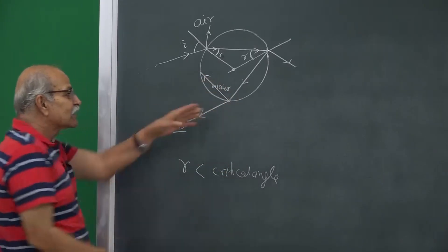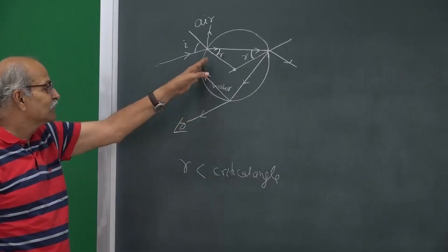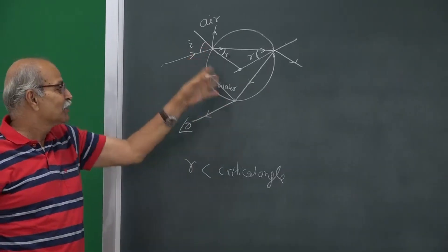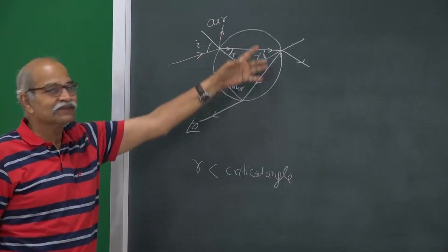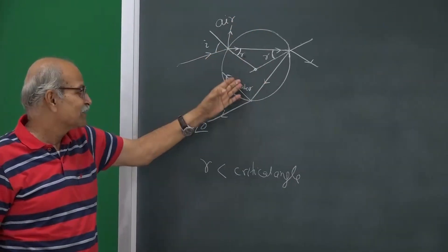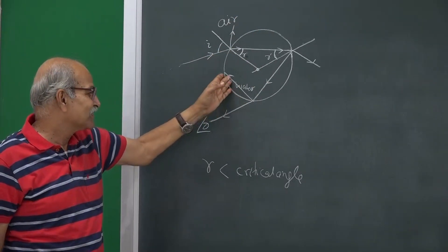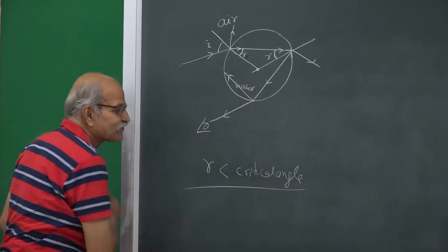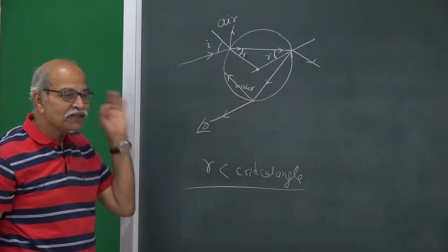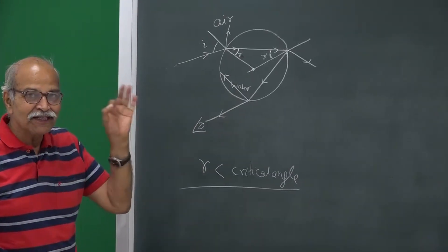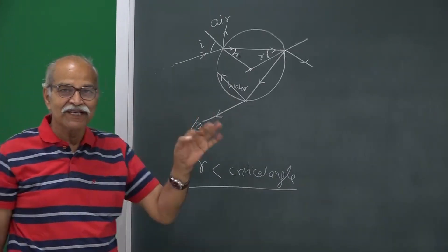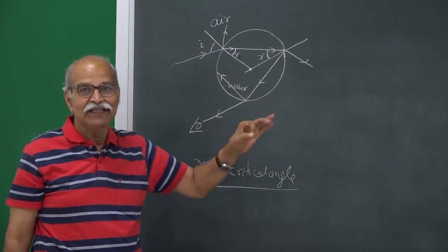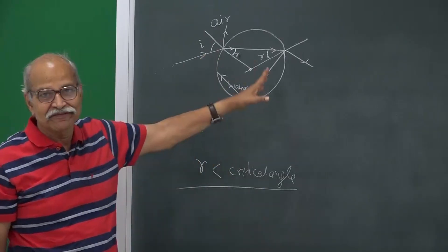The secondary rainbow is formed because of these partial reflections of this light. So that is all — you do not have total internal reflection in rainbow formation.